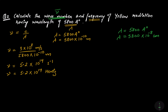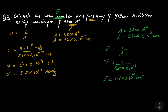The wave number = 1 / lambda = 1 / (5800 × 10⁻⁸), which comes out to be 1.72 × 10⁴ per centimeter. That means 1.72 × 10⁴ waves are forming per centimeter — that's the wave number. And 5.2 × 10¹⁴ waves are forming per second — that's the frequency. That was the second numerical.